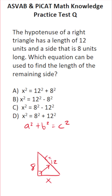So c in this case is 12. I'm going to let a be 8 and b be x. Let's go ahead and plug these values into the Pythagorean theorem. This becomes 8 squared plus x squared equals 12 squared.